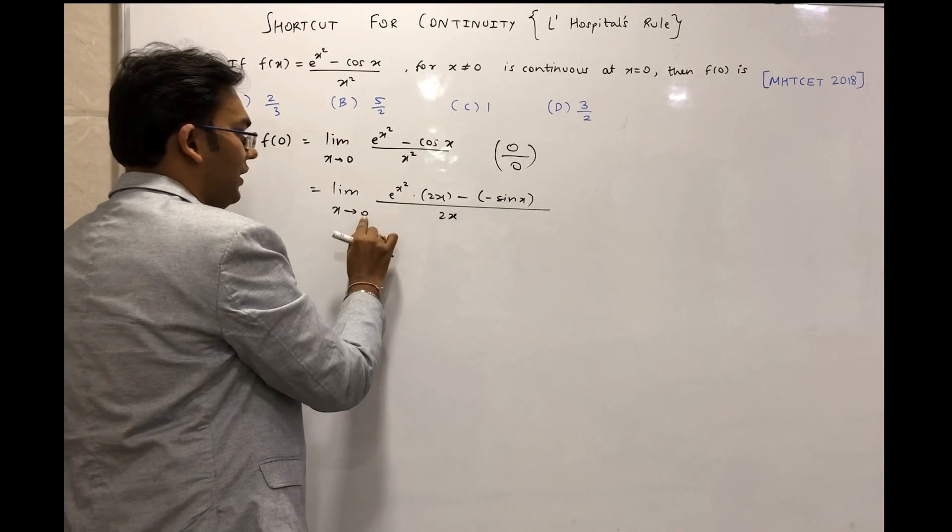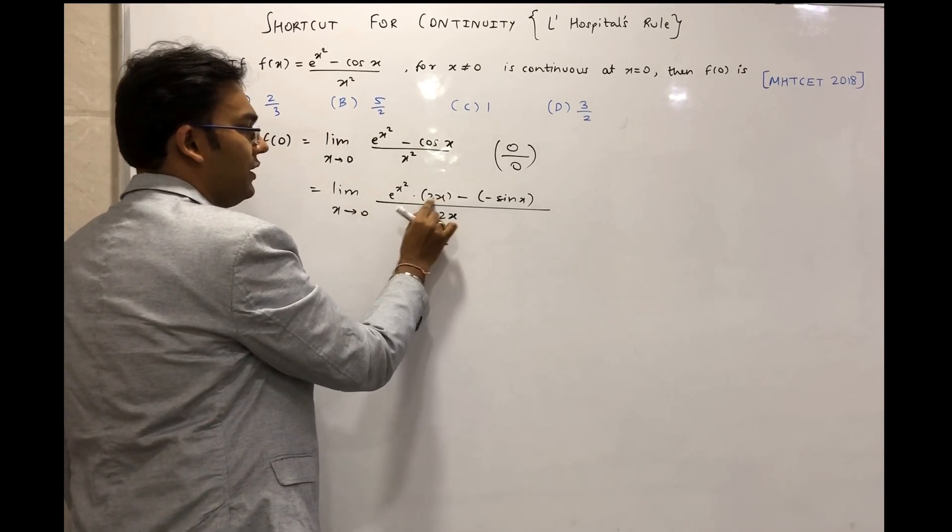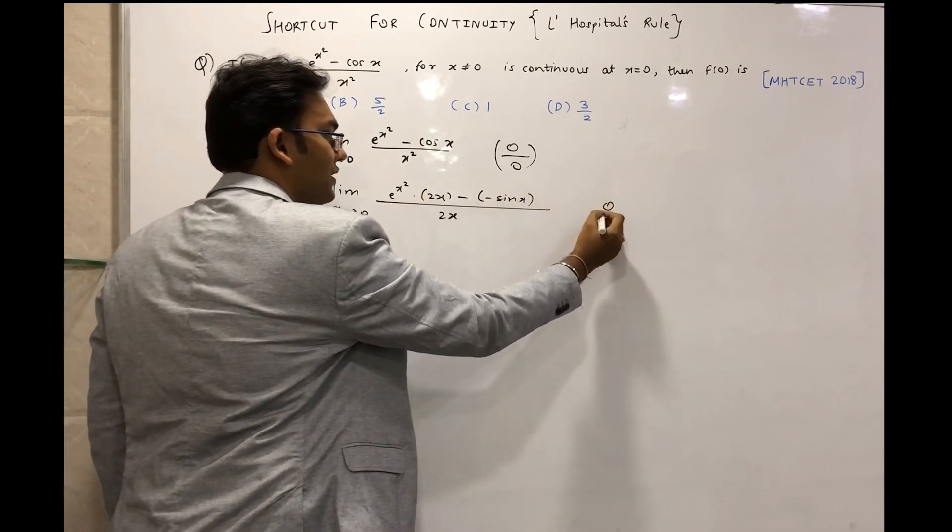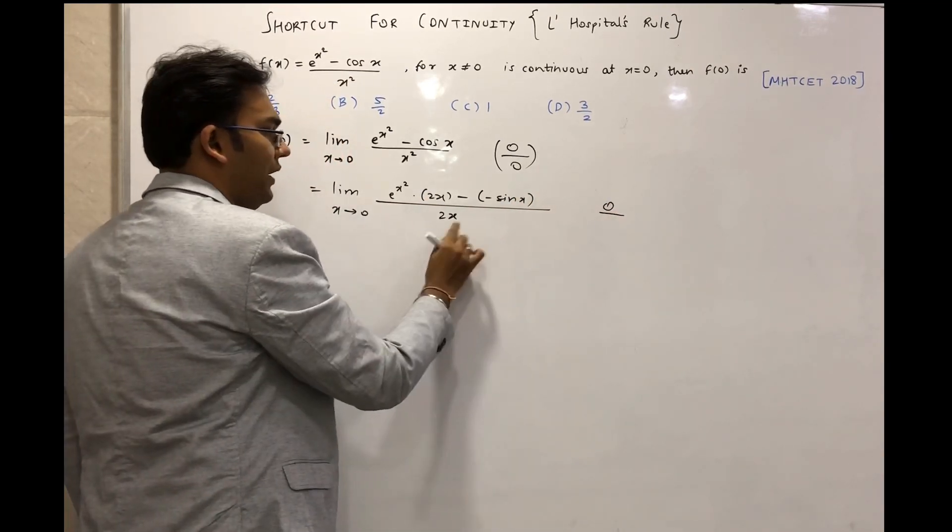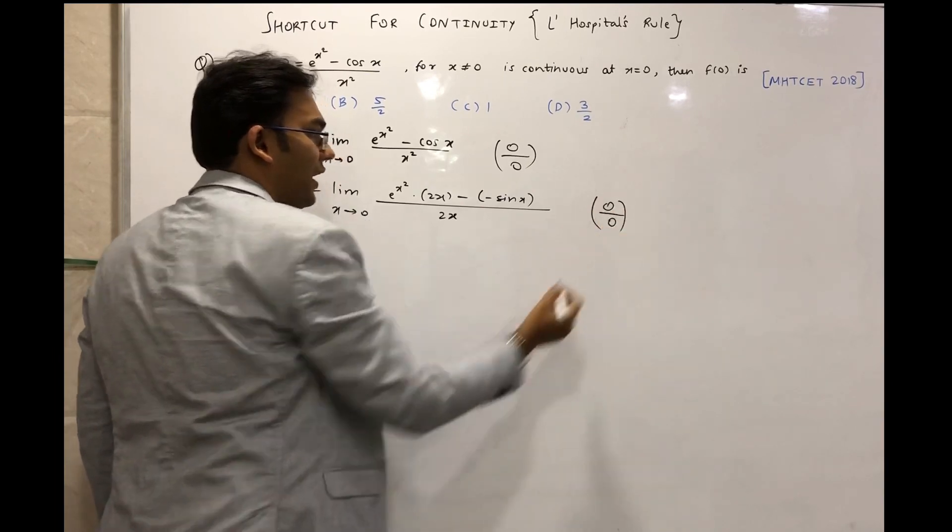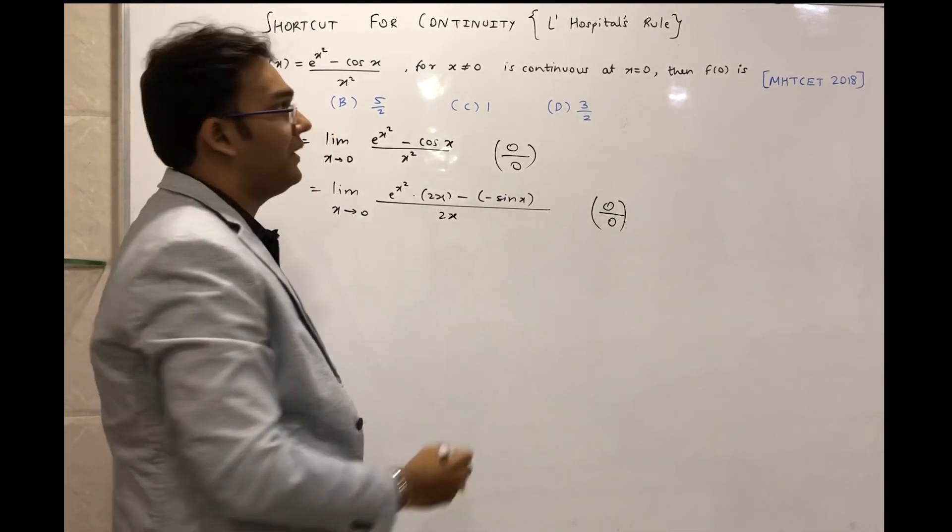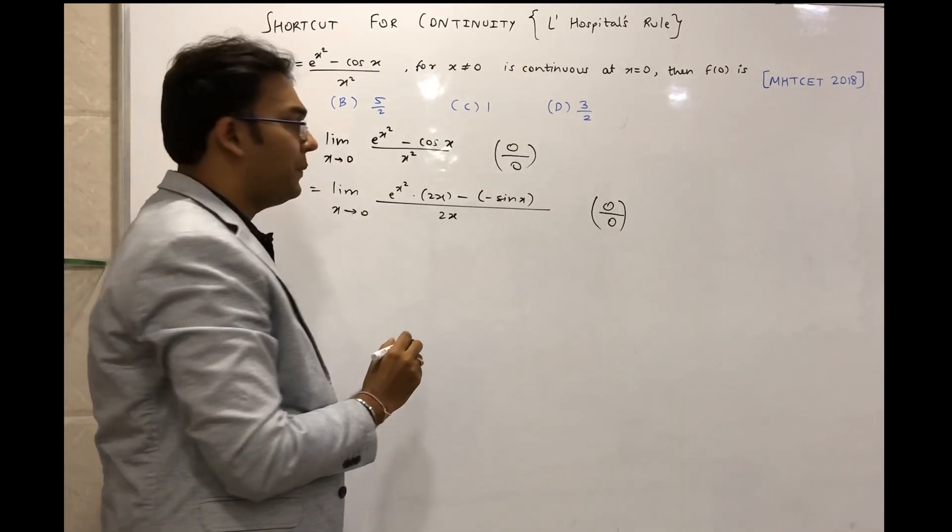Now let us try to substitute x = 0. What we get here is x = 0, so this entire term will be 0. Sin 0 is again 0. So the numerator is 0 and the denominator here again is 0. That means again this function is of the form 0/0. So we can again apply this L'Hospital's rule.